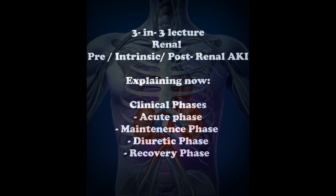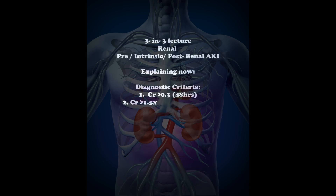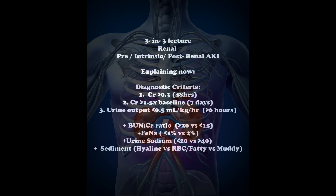AKI is diagnosed when a patient meets any of these criteria: serum creatinine increases by ≥0.3 mg/dL within 48 hours; serum creatinine rises to over 1.5 times baseline within one week; or urine output decreases to less than 0.5 mL/kg/hour for ≥6 hours. For example, a 120 kg patient producing less than 60 mL of urine per hour for six or more hours would meet criteria.